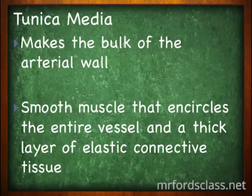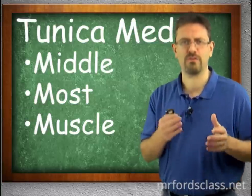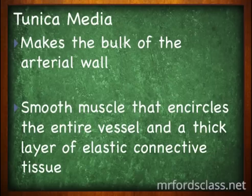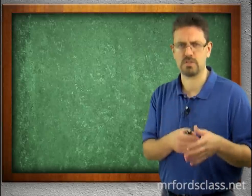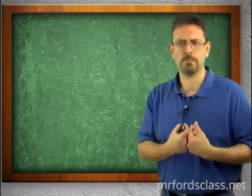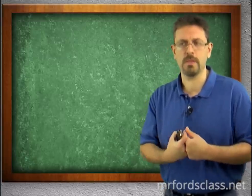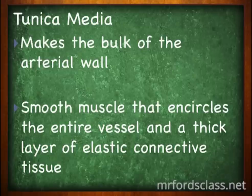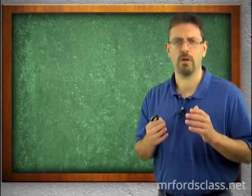The tunica media makes the bulk of the arterial wall — it's the most and it's in the middle. It is smooth muscle that encircles the entire vessel, plus a thick layer of elastic connective tissue. Smooth muscle is a powerful rhythmic contractor. The connective tissue gives the vessel elasticity to withstand the sudden increase in blood volume when the ventricles contract, and the smooth muscle is good for making the vessel smaller.